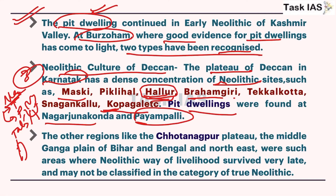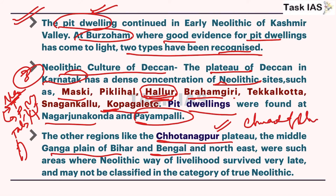Other regions like Chotanagpur Plateau, Middle Ganga Plain of Bihar, and Bengal are peripheral areas where some sites are also found - for example, Chiranda of Bihar. You can write down this example as well.